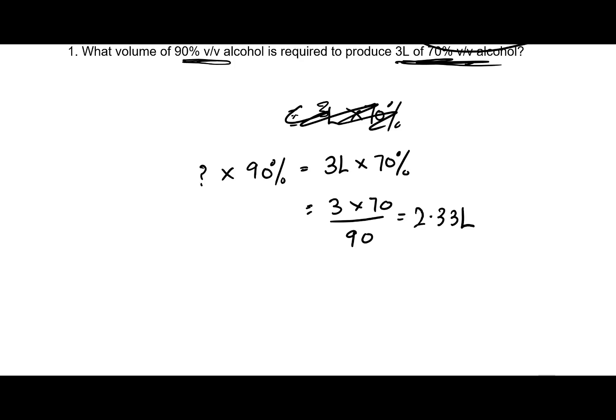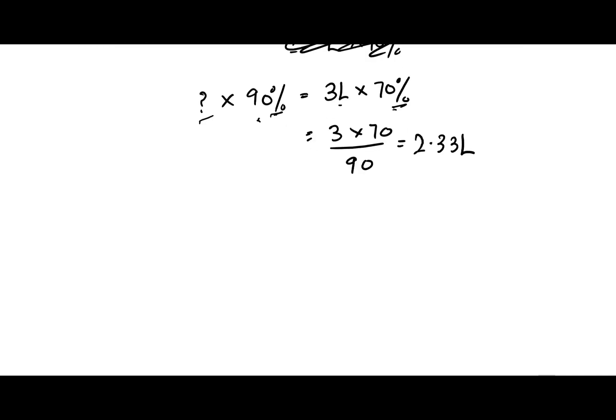One more thing to make sure whenever you are using C1V1 = C2V2 is that the units on both sides are the same. If you are using percentage, it should be percentage on both sides. The concentration should have the same units and the volume should also have the same units on both sides.